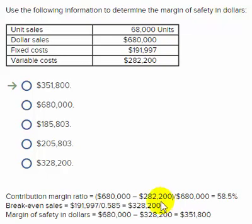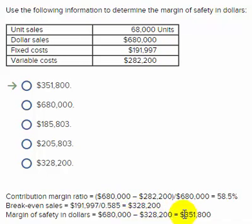So the margin of safety expressed in sales dollars would be our current sales of $680,000 subtracted from the break-even in sales dollars of $328,200, giving us $351,800 in sales dollars as a margin before we start losing money.